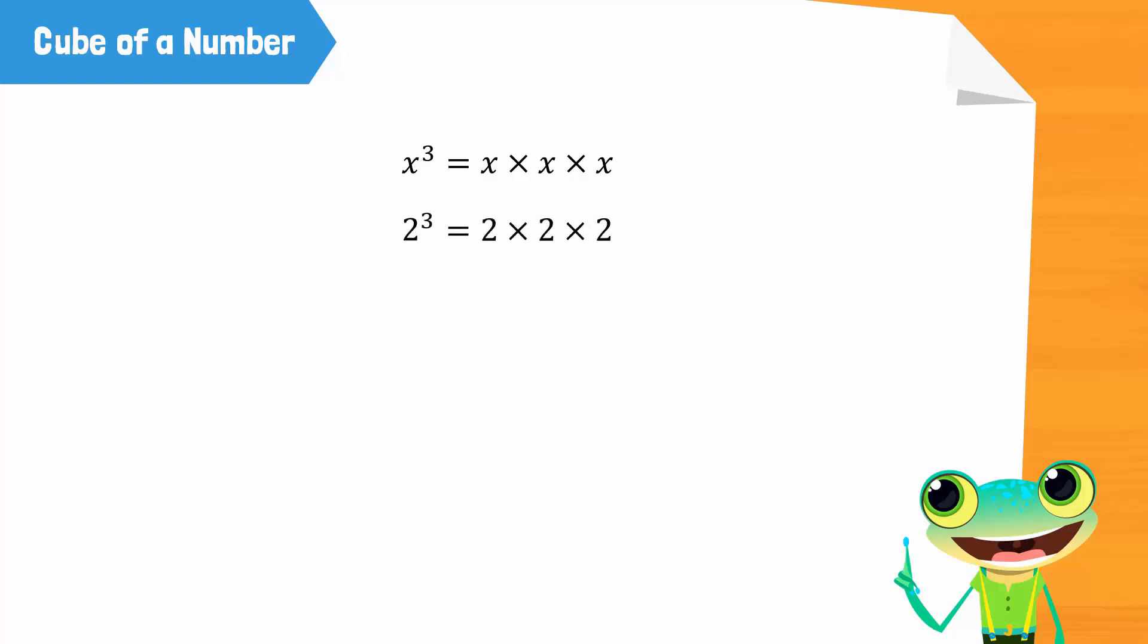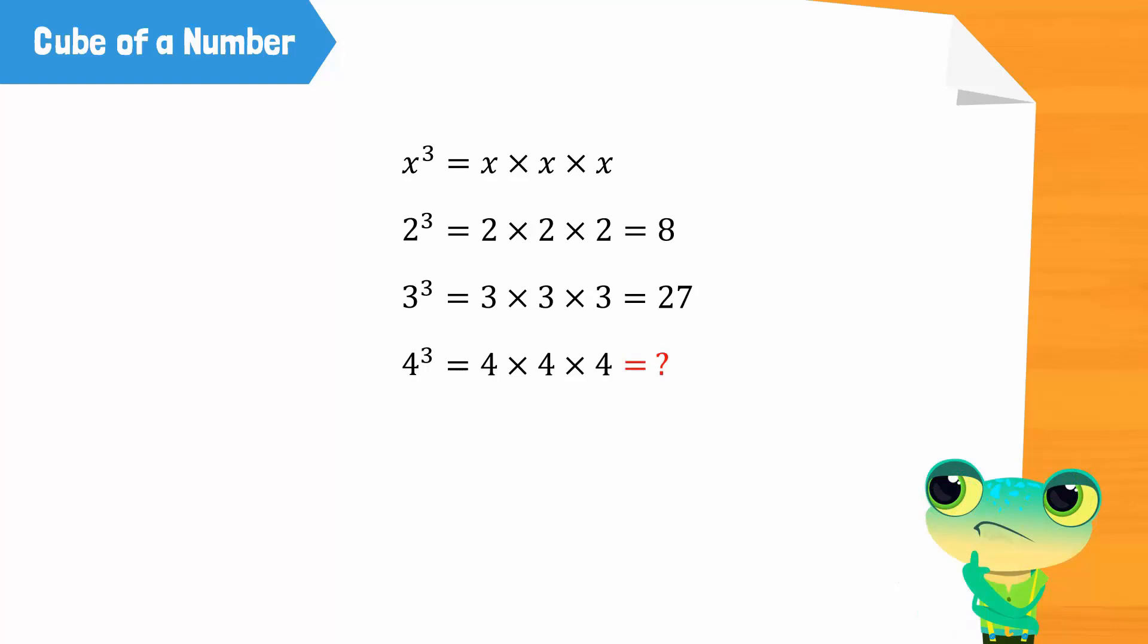2 cubed is 2 into 2 into 2 which is equal to 8. 3 cubed is 3 into 3 into 3 which is equal to 27. 4 cubed is 4 into 4 into 4. Can you tell what that is equal to?